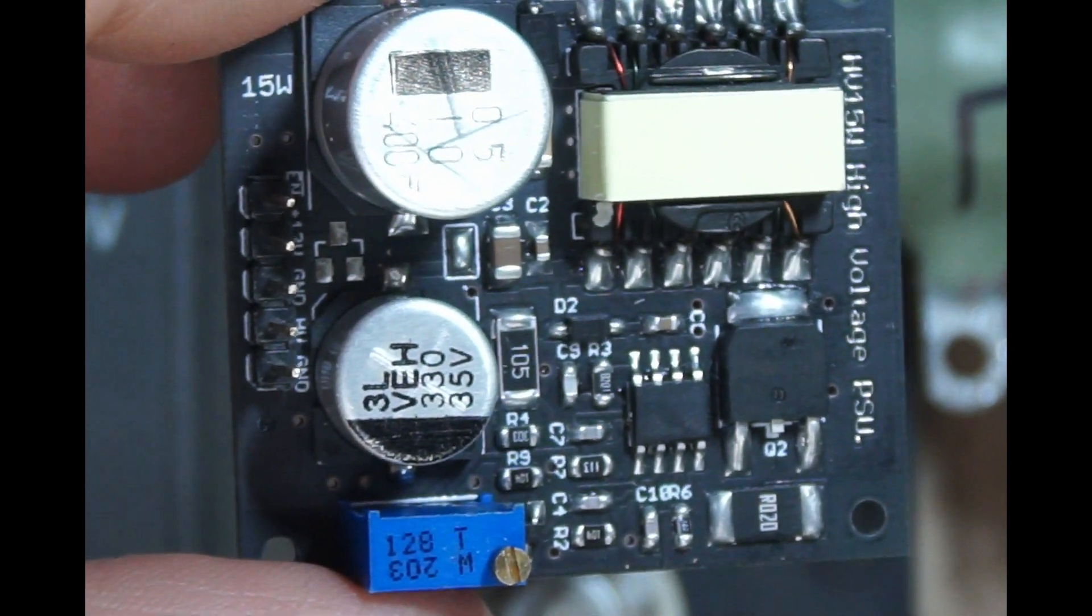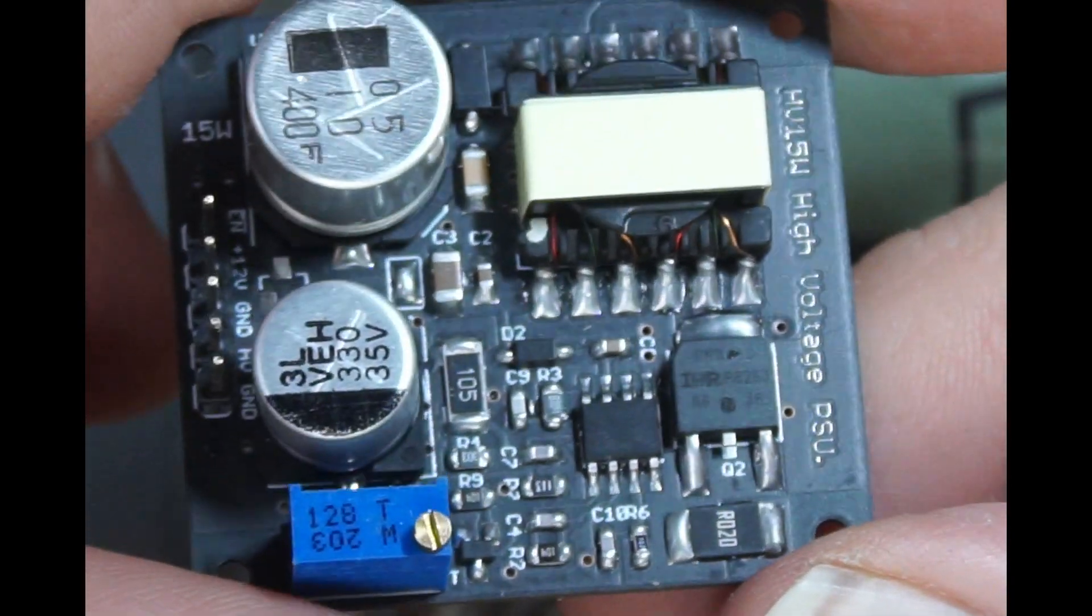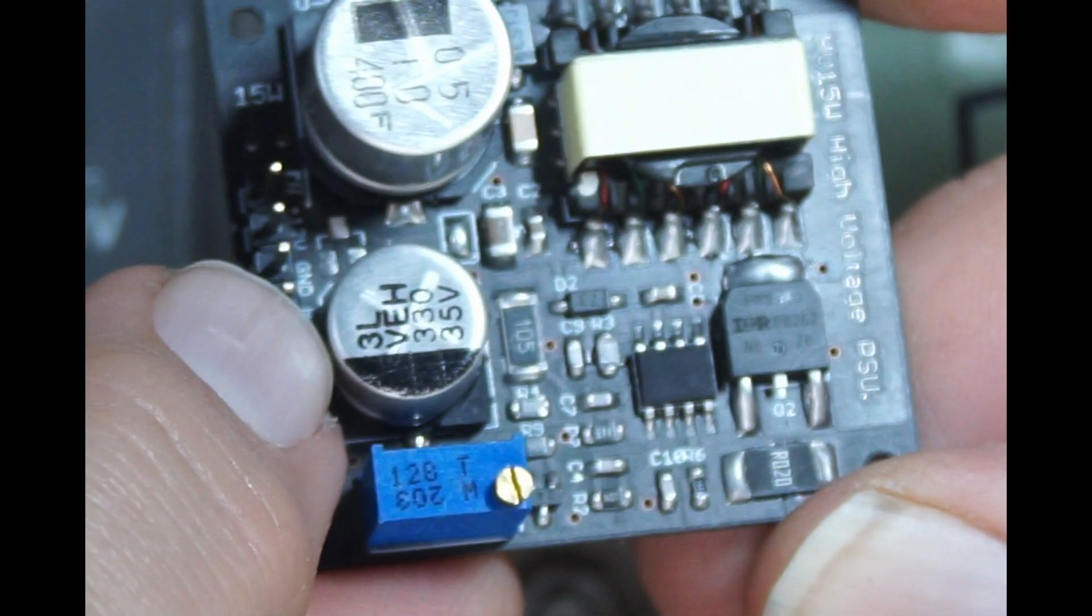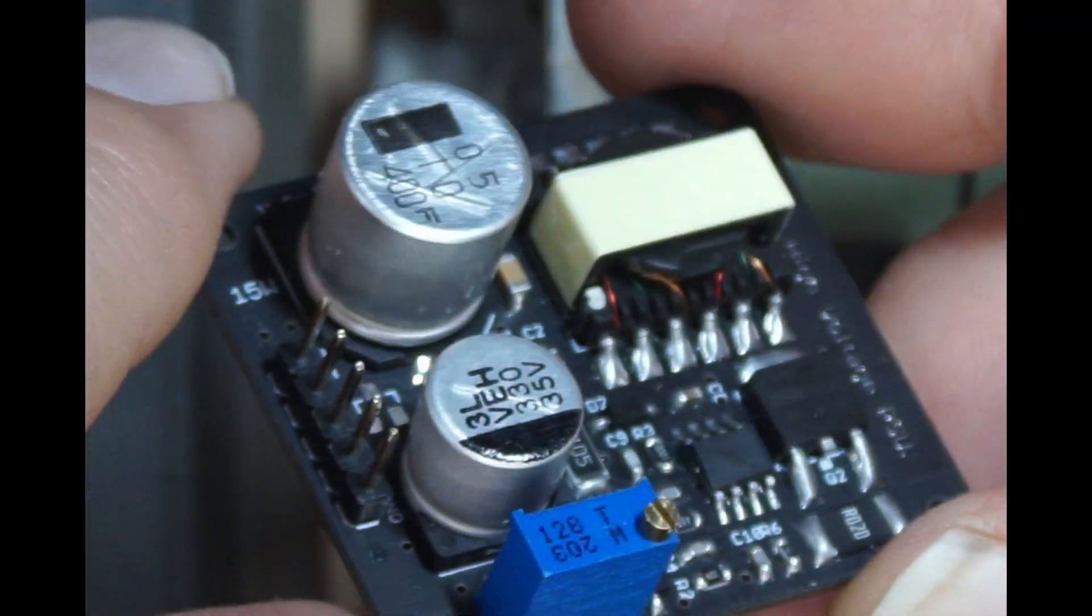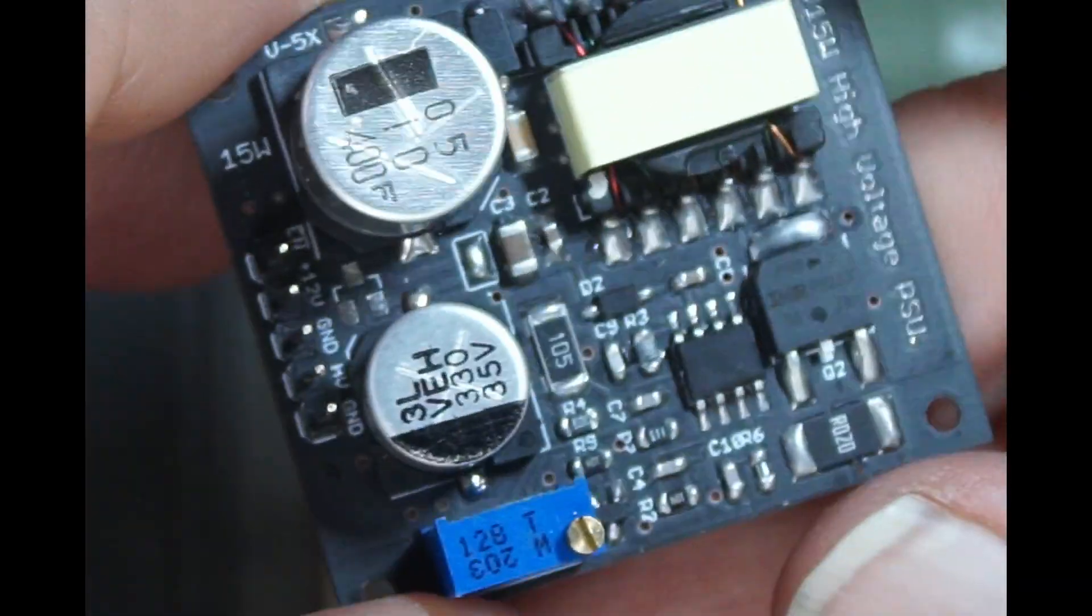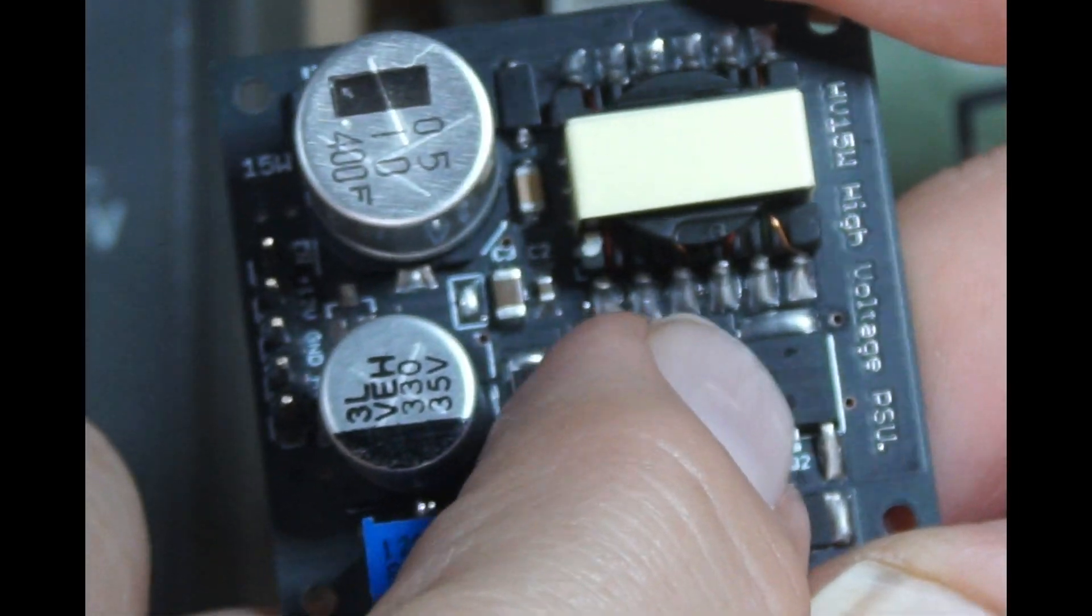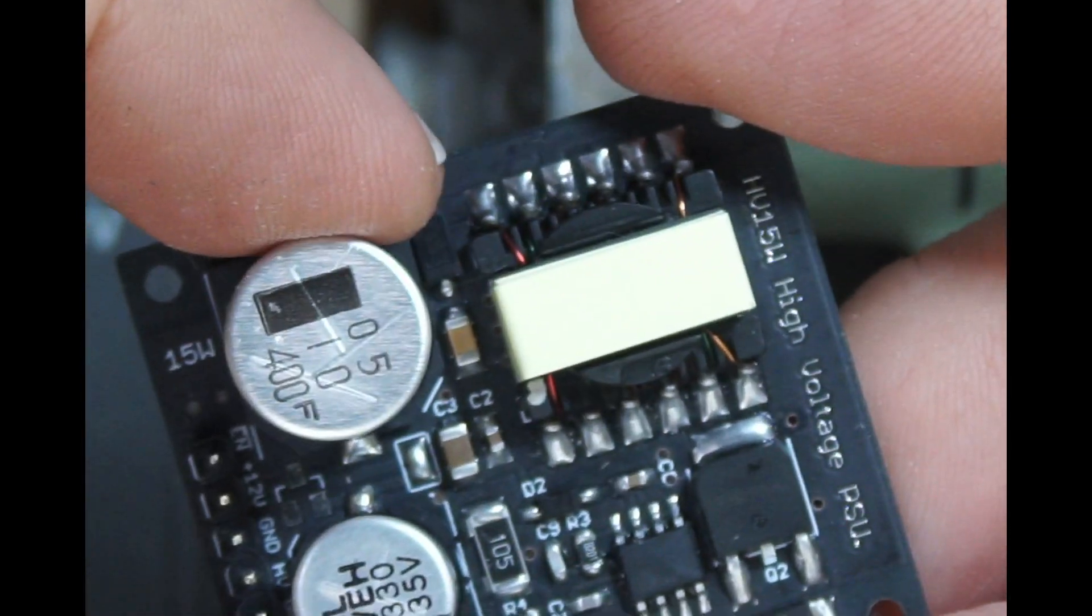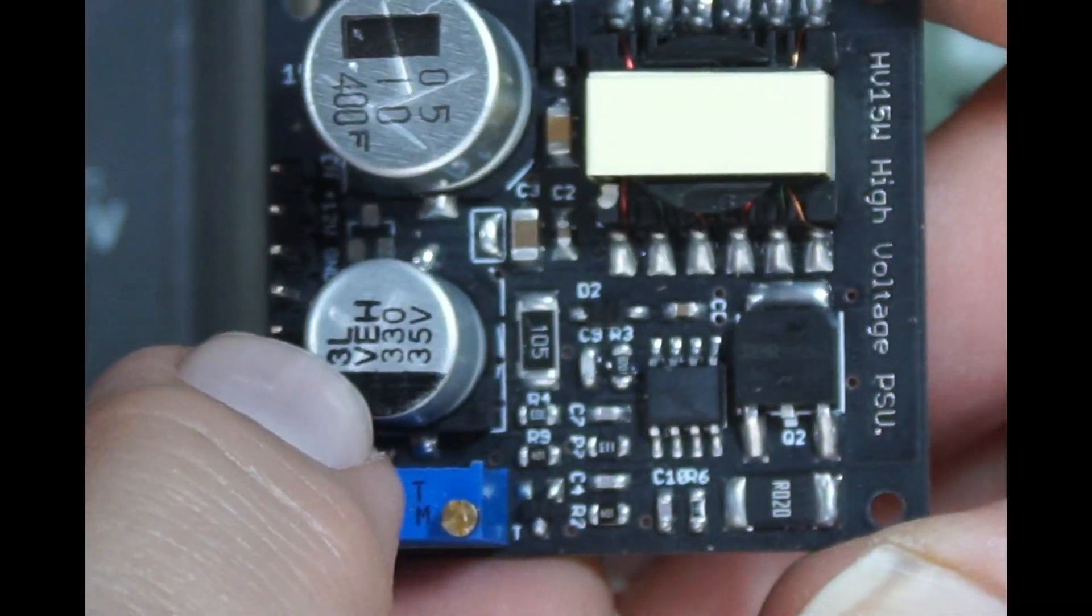This guy is the 15 watt one, and it's got a 330 microfarad input capacitor and a 10 microfarad 400 volt output capacitor. This is the output voltage trim pot here. Here's the transistor. There's probably a Schottky diode over here, and this is the flyback transformer, or the high voltage transformer.